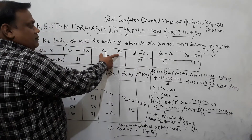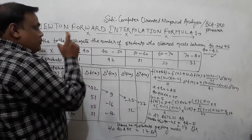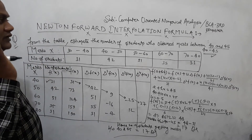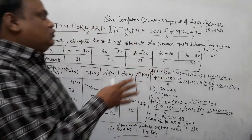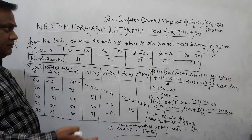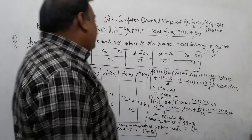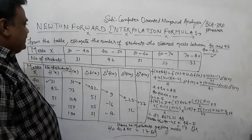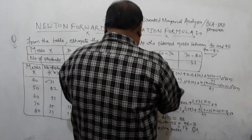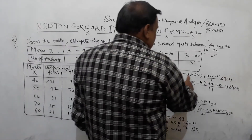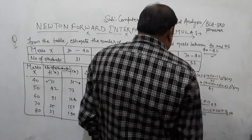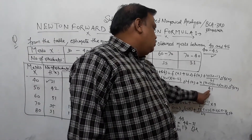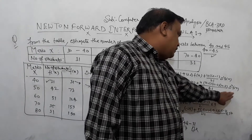We will use Newton Forward Interpolation Formula for this question. Since 40-45 is the interval at the beginning of the table, we use the forward formula. The formula is: f(a+uh) = f(a) + u·Δf(a) + u(u-1)/2! · Δ²f(a) + u(u-1)(u-2)/3! · Δ³f(a) + u(u-1)(u-2)(u-3)/4! · Δ⁴f(a).